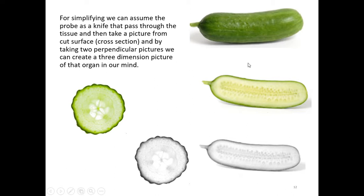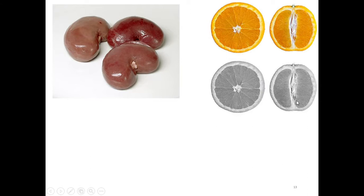When we cut a structure, we have two parts — we divide that structure into two. So when we say creating an image from the cross-section, which cross-section surface do we mean? Because we have two. If we get a picture from this part, the stem side will be on the left. If I take a cross-section from the other side, the stem or tail of the cucumber will be on the right side. So which cross-section do we image in ultrasound? We will answer that question shortly.